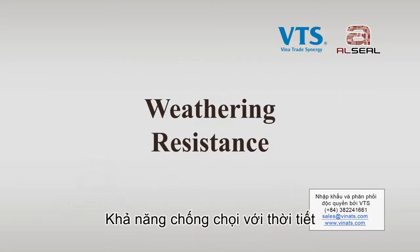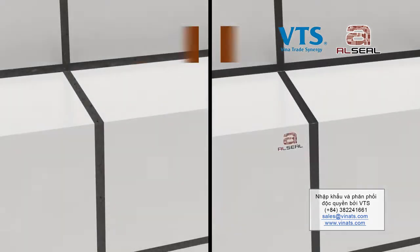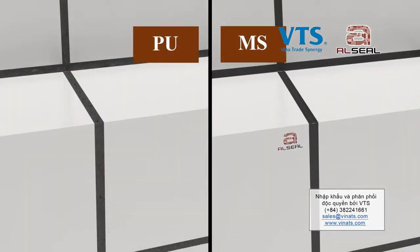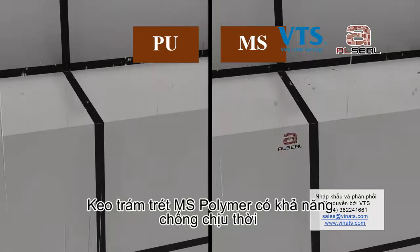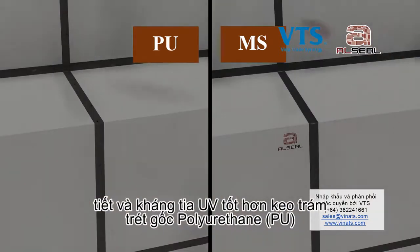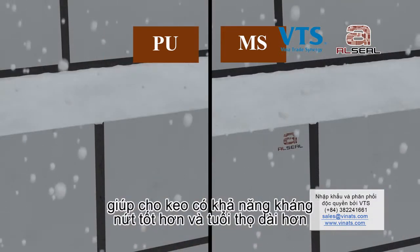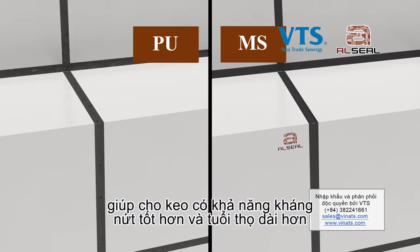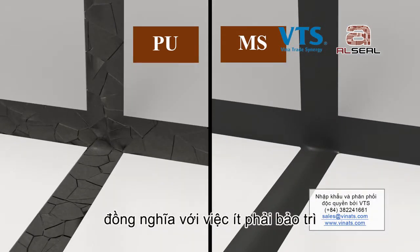Weathering Resistance. MS Polymer Sealant has better weathering and UV resistances than polyurethane sealant, making it more resistant to cracks to give a longer service life with less maintenance hassle.